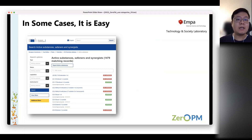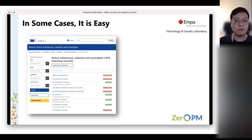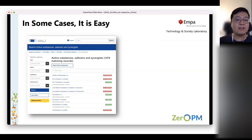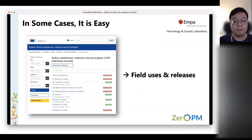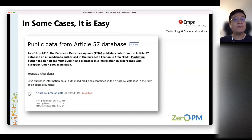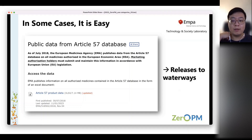In some cases it is easy to get use information and understand releases. For example, the EU has a pesticides database so we know the chemicals that will have field uses and releases. Similarly, there are also databases for pharmaceuticals, and for those chemicals we know there will be excretion and likely releases into waterways.